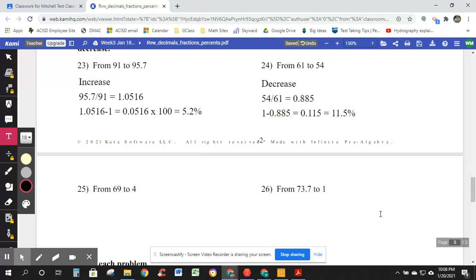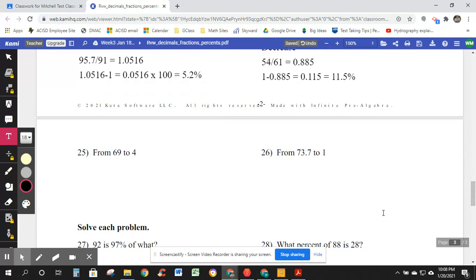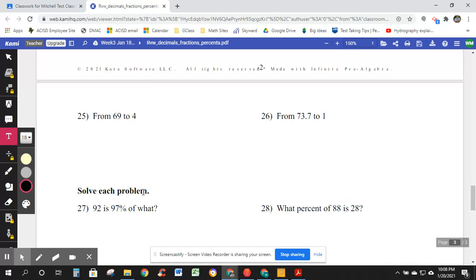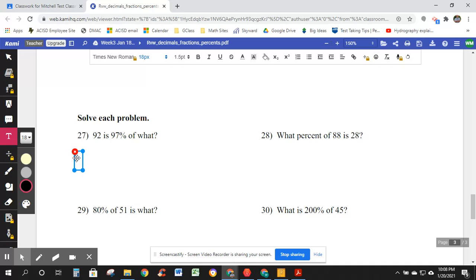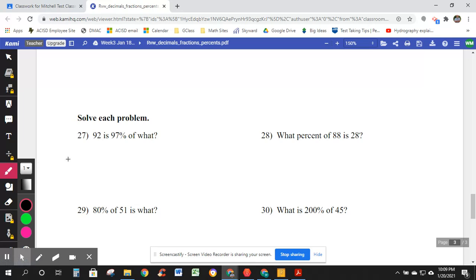These might be pretty challenging. Take your time with them. There's two more there. We're on the last page. 27. Take a break if you need. 27. I'm going to try at least one of these. I'm using my pen. Here we go. I can't wait. I'm excited. 92 is 97% of what? 92 is 97% of what? When you see what, you can think of it as an X of what? 92 is 97% of what?